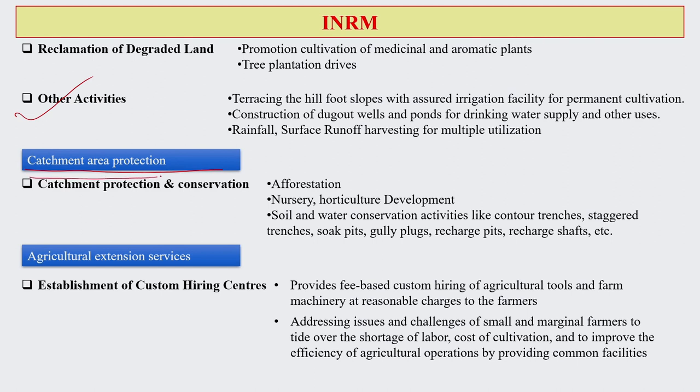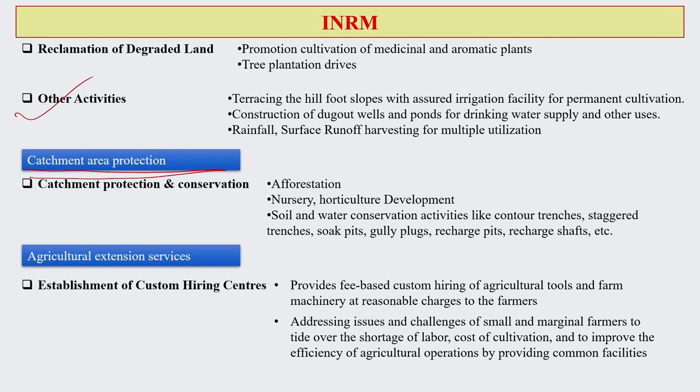Catchment area protection is very important and will be discussed in great detail when we talk about watershed management. Catchment protection and conservation is critical for not only water resources management but also for soil and land resource management. Activities include afforestation, nursery development, horticulture development, and soil and water conservation activities such as contour trenches, stagger trenches, soak pits, gully plugs, recharge pits, and recharge shafts.